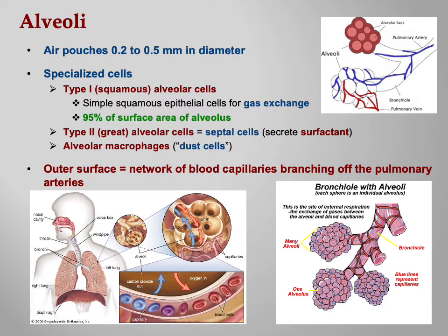The outer surface of the alveoli has a network of blood capillaries branching off the pulmonary arteries. The arteries and veins covering the alveoli are pulmonary. Remember the bronchial arteries and veins are actually supplying blood to the lung tissues themselves, but the alveoli are covered with pulmonary capillaries.